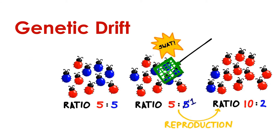Genetic drift refers to changes in populations caused by chance events. For example, if a certain percentage of individuals were randomly selected and removed from a population, the population may afterward have a very different set of physical characteristics simply by chance.